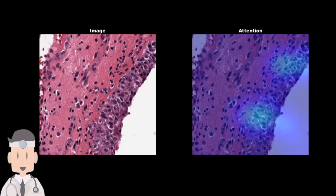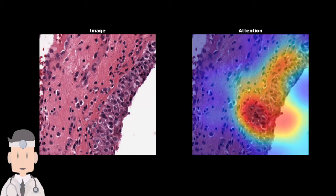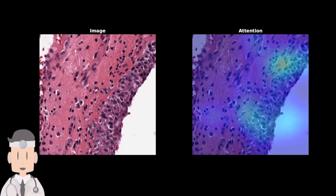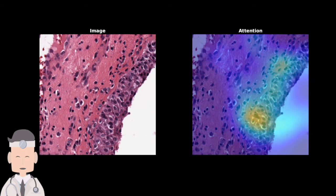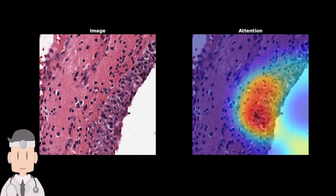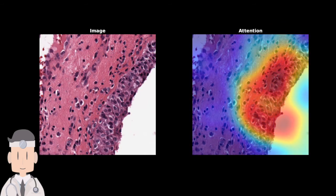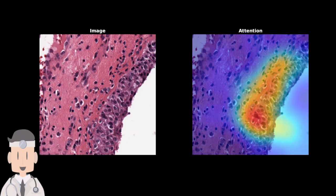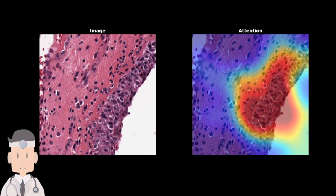The nuclei are mildly pleomorphic. There is normal crowding. Polarity along the basement membrane is negligibly lost. Mitosis is rare throughout the tissue. The nucleoli of the nuclei are inconspicuous. Conclusion: Normal.